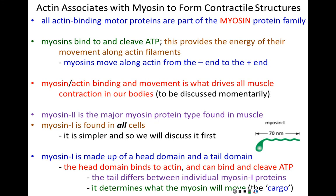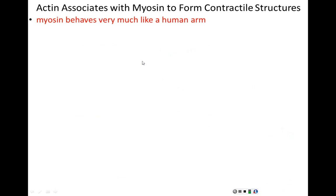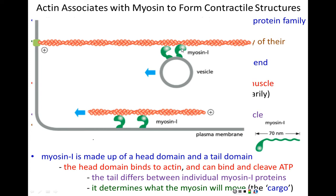The tail determines whether myosin is binding to a vesicle and transporting cargo, or binding to the cell membrane and causing the cell to crawl. The head region of myosin binds to the actin filament and is responsible for movement and ATP cleavage; the tail region binds to whatever myosin is trying to move. If transporting a vesicle, the tail binds to that; if moving the cell itself, the myosin tail binds to the cell membrane, and by pulling on the cell membrane, causes the cell to crawl.